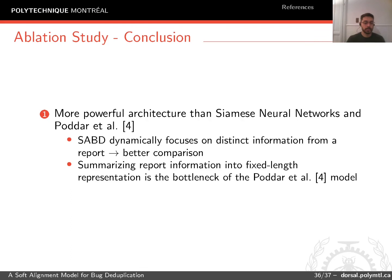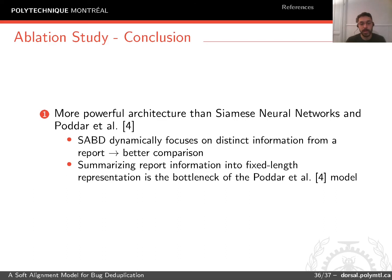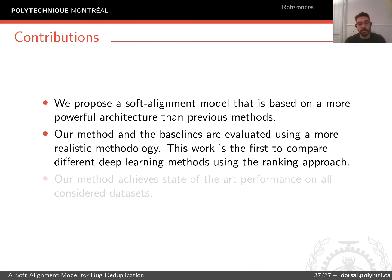We can conclude that our network has a more powerful architecture than CME's neural networks and PODR. The way we dynamically focus on distinct information from reports helps us to better compare them. We also conclude that summarizing report information to a fixed-length representation is a bottleneck of PODR. Our contributions are: a soft-aligned model based on a more powerful architecture than previous methods; evaluation using a more realistic rank-based methodology; the first comparison of deep learning methods using a rank approach; and state-of-the-art performance on all considered datasets.